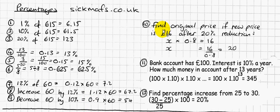Let's move on and build on these ideas with decimals. I'm going to do something which is often known as reverse percentages. Basically, I've got an original amount which I don't know, but I know I reduced that original amount by 20%, and now I've got £16.